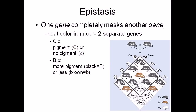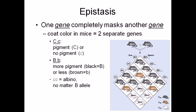Small C here is acting as the epistatic gene. That means if there is no pigment present, even if you have the capital B gene in your DNA, it won't be expressed — because there is no pigment present. Though you carry the gene for black coat color, with no pigment there will be no coloration.